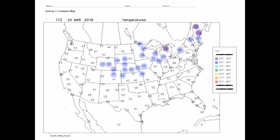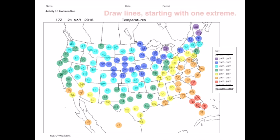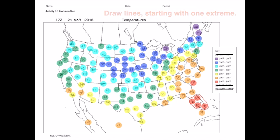I'll start with the 20s and shade them all in purple. Once I've shaded in all the numbers it's time to draw lines around regions that have the same temperature. I'll start by shading in the 80s region. I draw a line around those numbers and then shade in that area all the same color.